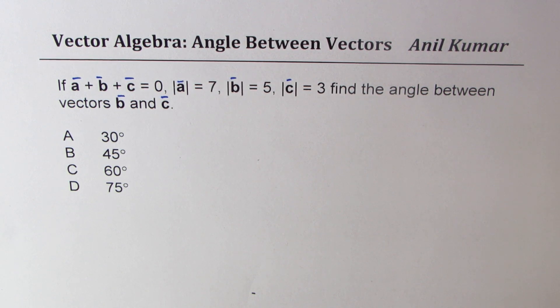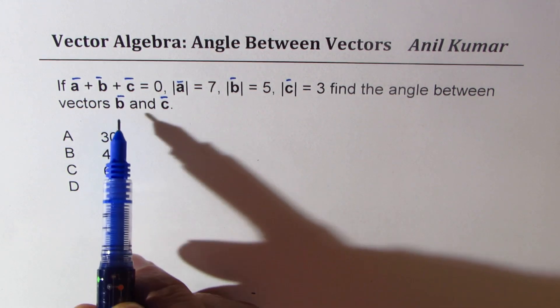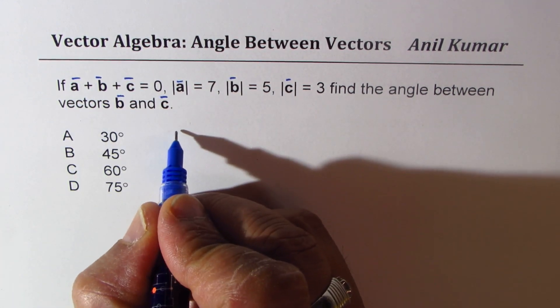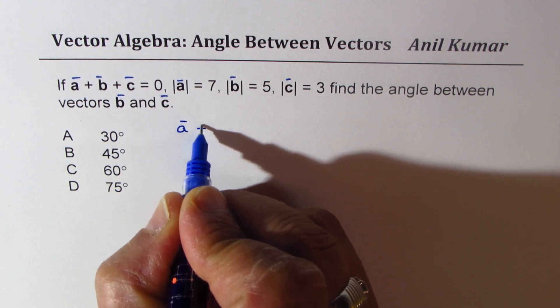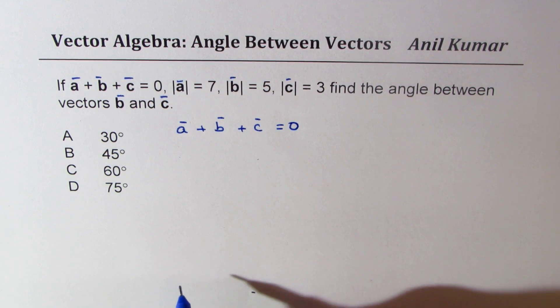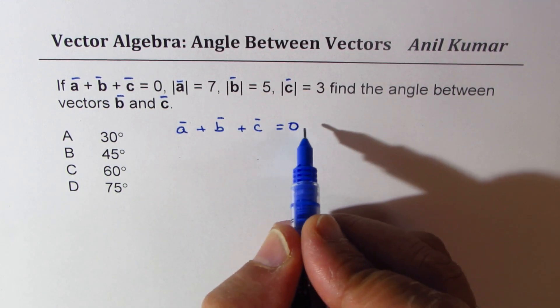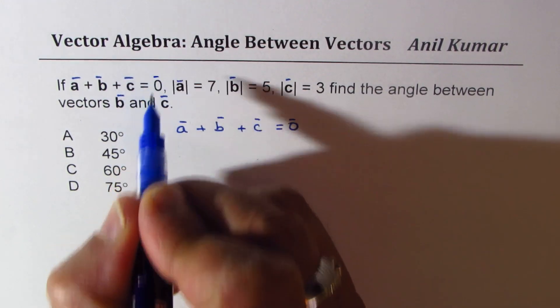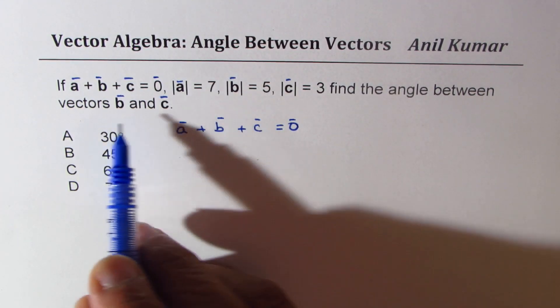You can always pause the video, answer the question, and then look into my suggestions. Now since we need to find the angle between b and c, let's begin with the given equation, which is vector a plus vector b plus vector c equals zero. We should actually treat this as a zero vector.